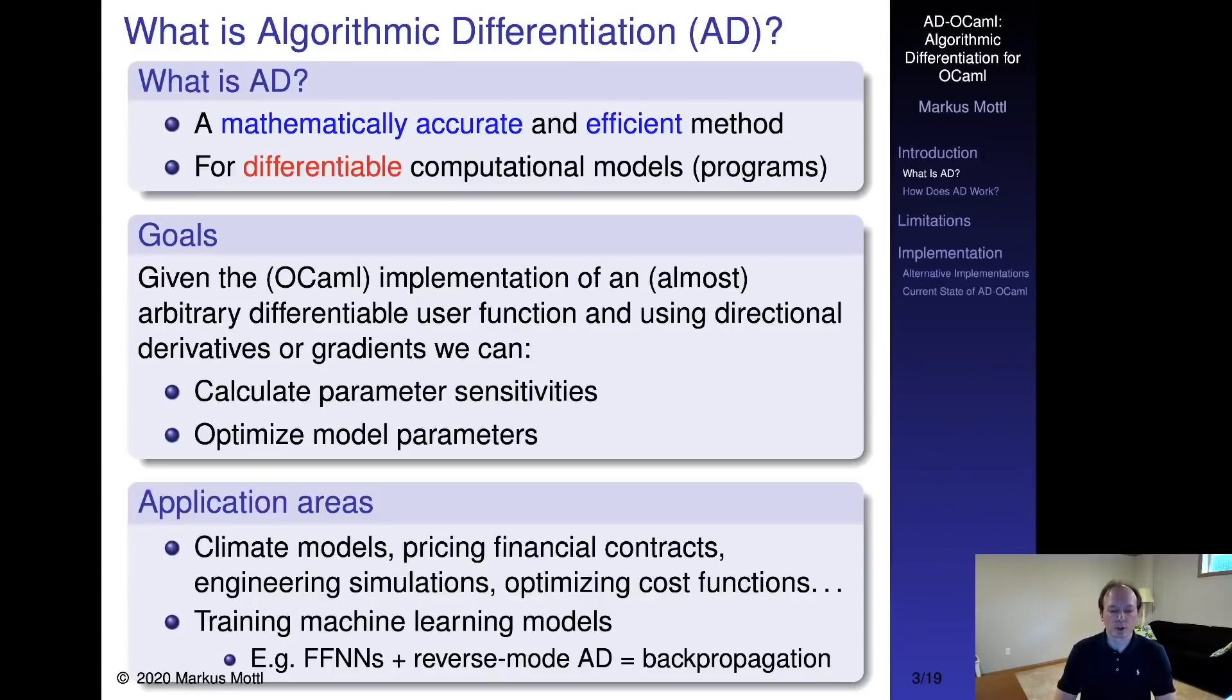Unlike solutions that use numerical approximations, algorithmic differentiation yields mathematically accurate results for gradients and directional derivatives. AD methods are also typically more efficient. Obtaining derivatives using AD only takes a constant factor more time than evaluating the user program. One restriction is that the computer program is differentiable. It may seem surprising but this is frequently already the case or can often be achieved with minor changes or relaxations.